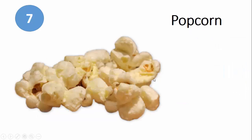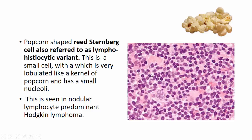The seventh one is the popcorn — popcorn-shaped Reed-Sternberg cells, also called the lymphohistiocytic variant of the Reed-Sternberg cell. This is a smaller cell compared to the conventional Reed-Sternberg cell, which is usually 15 to 45 microns in size. The nucleus is lobulated like a kernel of popcorn and has a very small nucleolus, in contrast to the classical Reed-Sternberg cell with its larger inclusion-like nucleolus. This is seen in nodular lymphocyte-predominant Hodgkin's lymphoma.